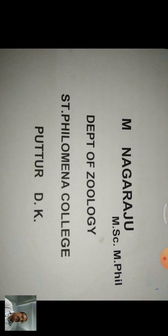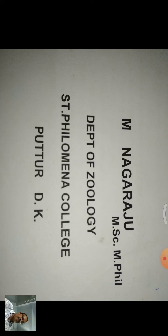Today we talk of gametogenesis. Gametogenesis can be defined as the production of gametes from gonads. Gametogenesis includes spermatogenesis and oogenesis. Spermatogenesis is the process of formation and maturation of sperms by testes. Oogenesis is the process of formation and maturation of eggs by ovaries.